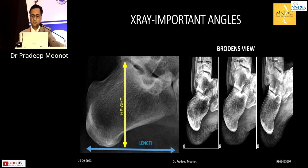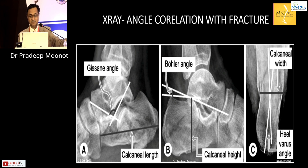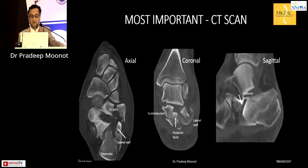Brodén's view is taken with the beam at 10, 20, and 30 degrees of internal rotation. On imaging, look at Gissane's angle and calcaneum length — the first picture on the left shows significant shortening. Böhler's angle may be reduced to only 5 to 10 degrees and the width of the calcaneum is increased. The calcaneal tuberosity is in varus.